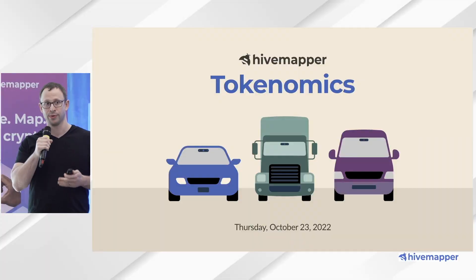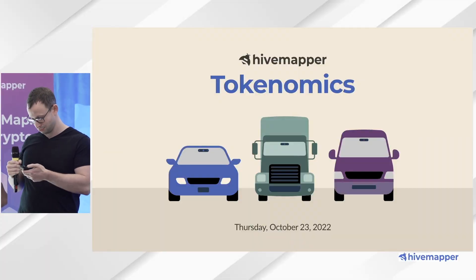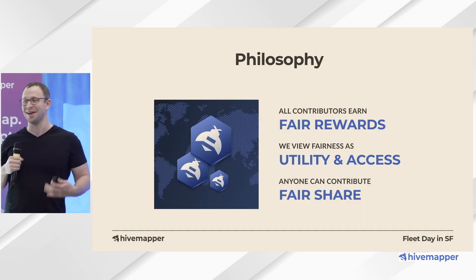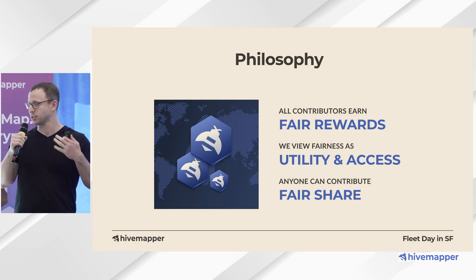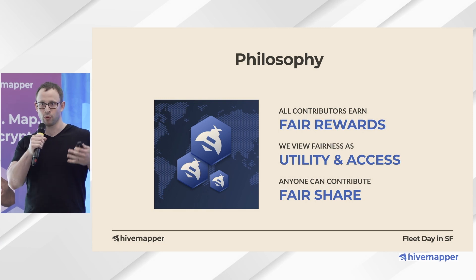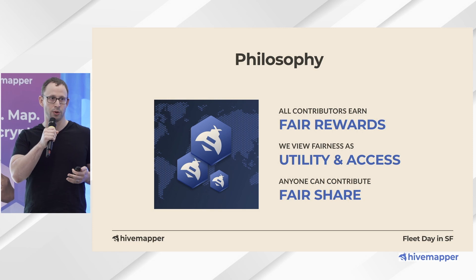The goal of HiveMapper is to continuously generate fresh and high quality data and to enable anybody to access that. We need a system that drives the supply via the demand that wants to consume the data, and also enforces some level of compliance so that all this data is standardized, high quality, and reliable. We do that through a token system — it's a utility token.